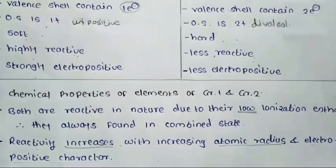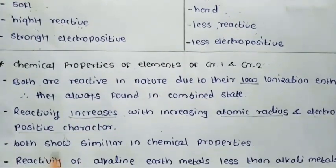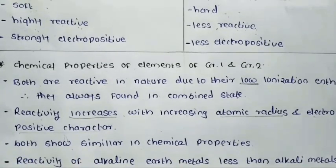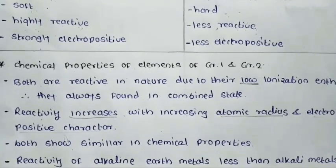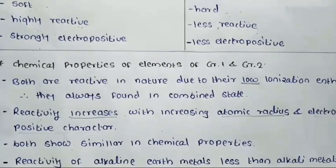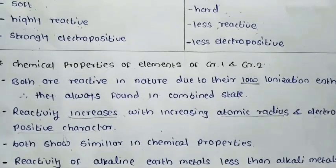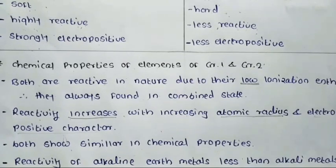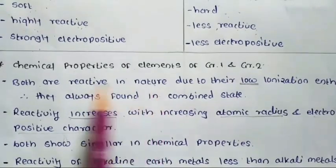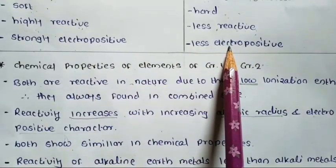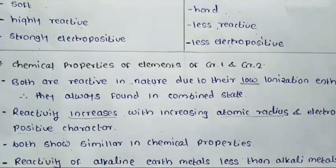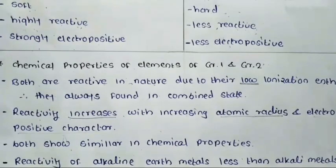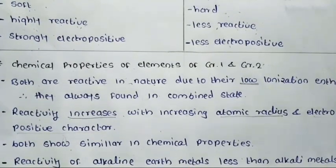Both alkali metals and alkaline earth metals show similar chemical properties. The difference is determined by their ionization enthalpy, atomic radius, and related differences. The reactivity of alkaline earth metals is less than that of alkali metals, but both are reactive in nature.